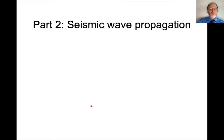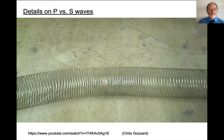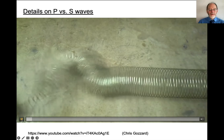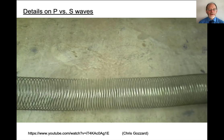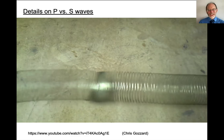Now let's move on to seismic wave propagation. There are P waves and S waves — compressional waves and shear waves. P waves travel through anything, and their particle motion is parallel to wave propagation, like sound waves that compress and expand air. Shear waves travel only through solids, and the particle motion is perpendicular to wave propagation. Here is a short video using a slinky to explain the difference: the S wave motion is up and down, while the P wave motion is in and out in the direction of propagation.